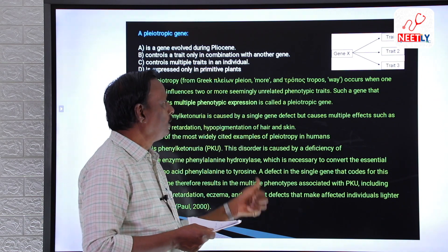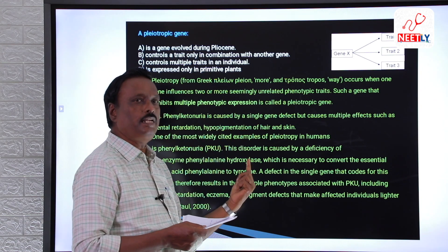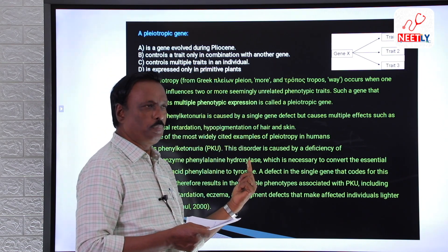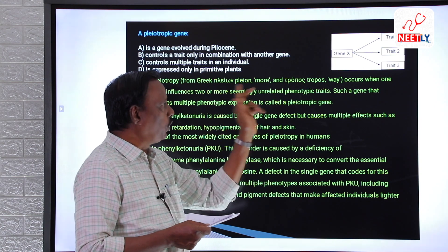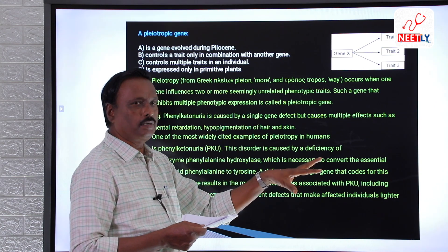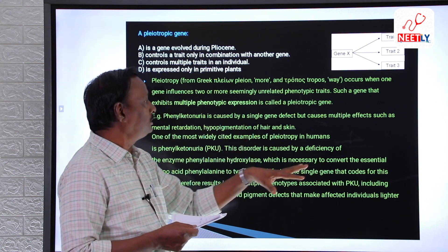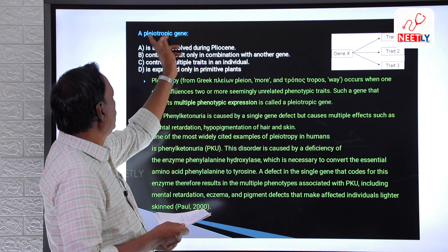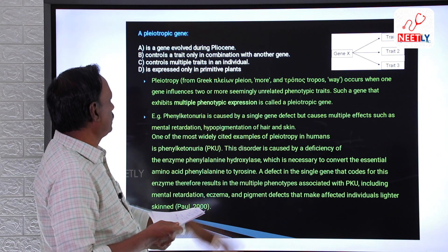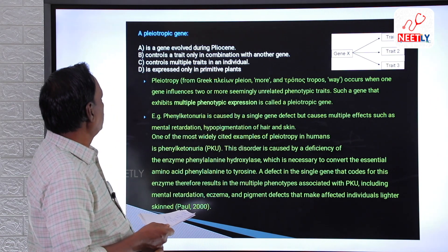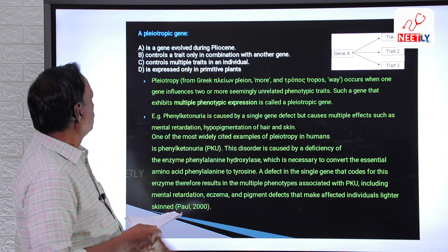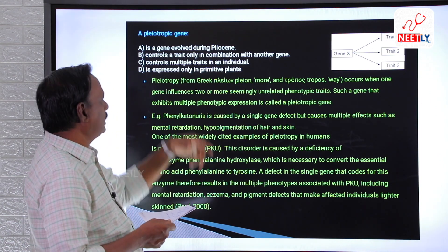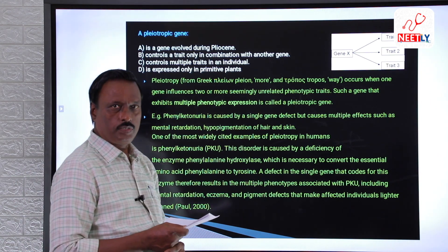Thus, this PKU gene is responsible for four different characters: the phenylalanine hydroxylase enzyme, mental retardation, eczema, and pigment defects. When a single gene is responsible for more than one character, that gene is called a pleiotropic gene. So C is the correct answer for this question.